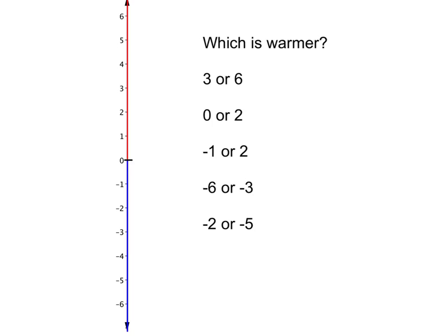This makes it easier to answer questions like: which is warmer, 3 or 6 degrees Celsius? Well, the obvious answer is 6 because our 6 is higher up. Similarly, if we compare 0 and 2, then we will see that 2 is higher up, so it is the warmer temperature. Comparing negative 1 and 2, we can see 2 is higher up so it is warmer. Now if we compare negative 6 and negative 3, even though those are both really cold, negative 3 is higher up so it is warmer. Similarly, if we compare negative 2 and negative 5, negative 2 is higher up, so it is warmer.